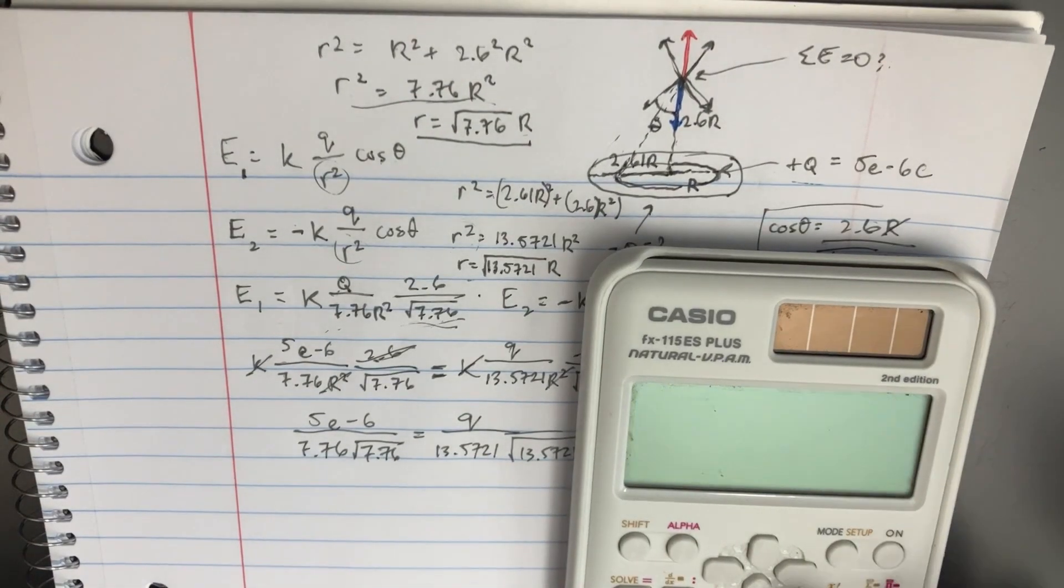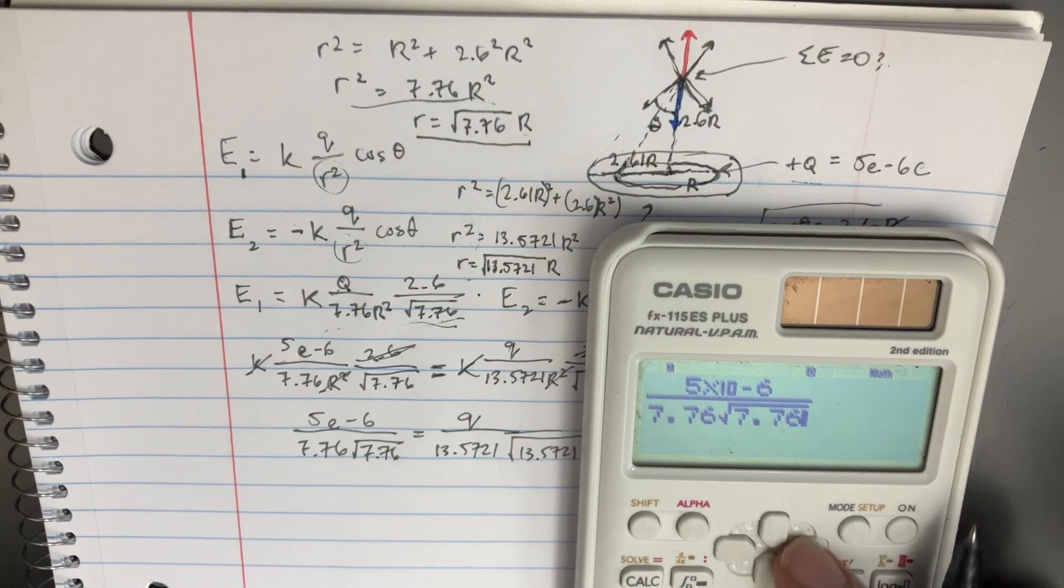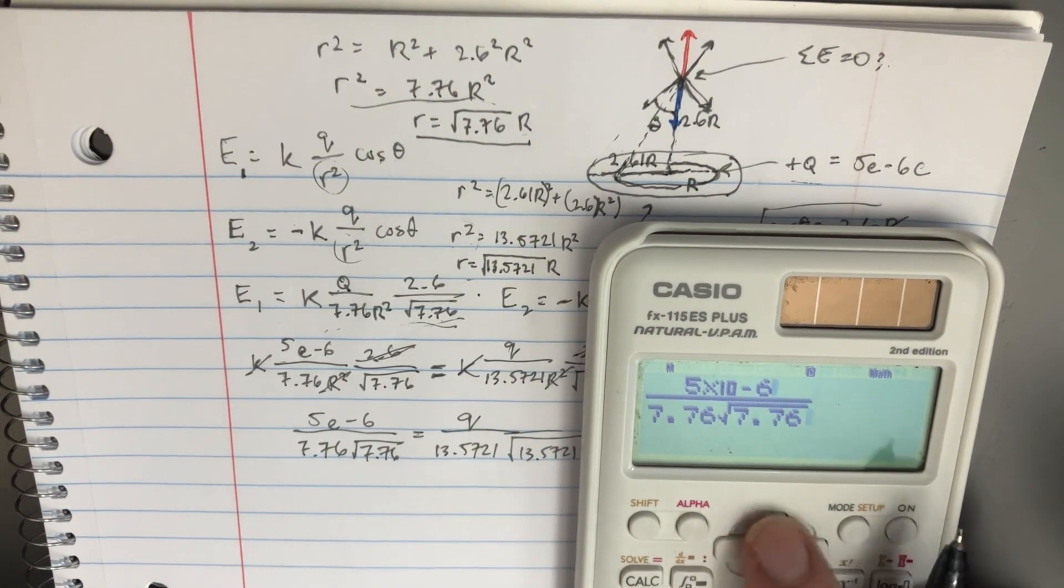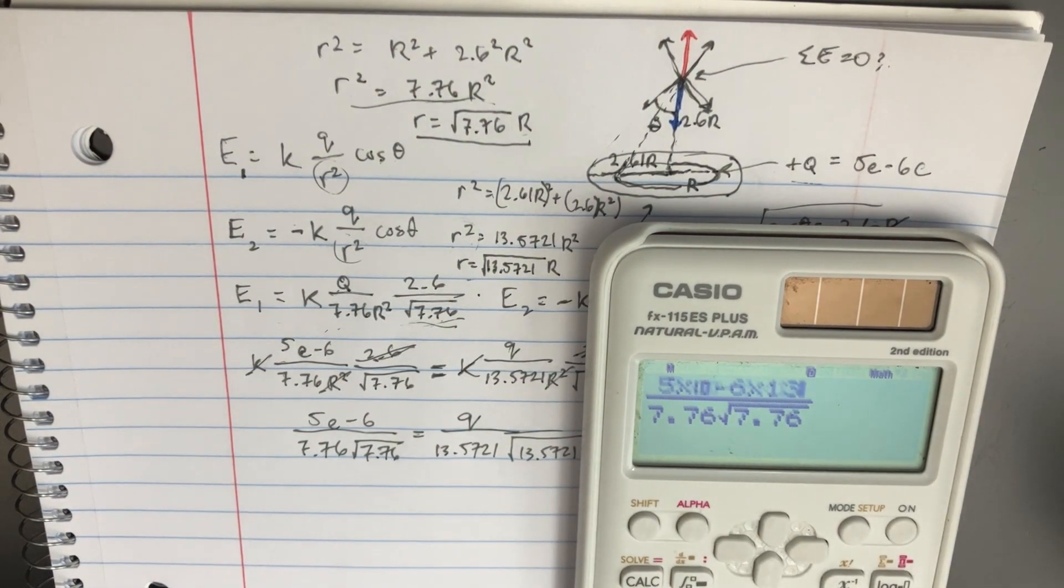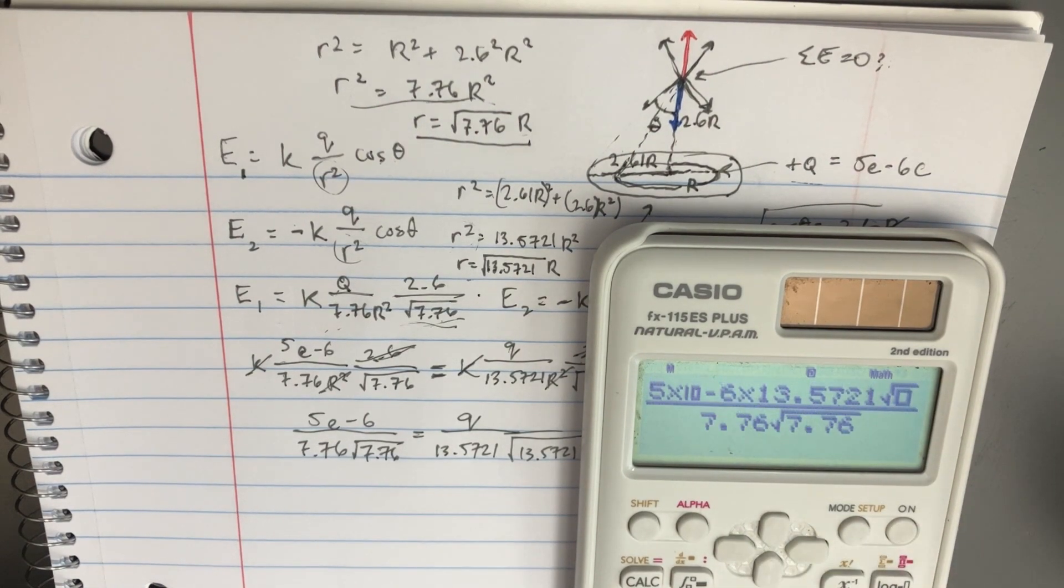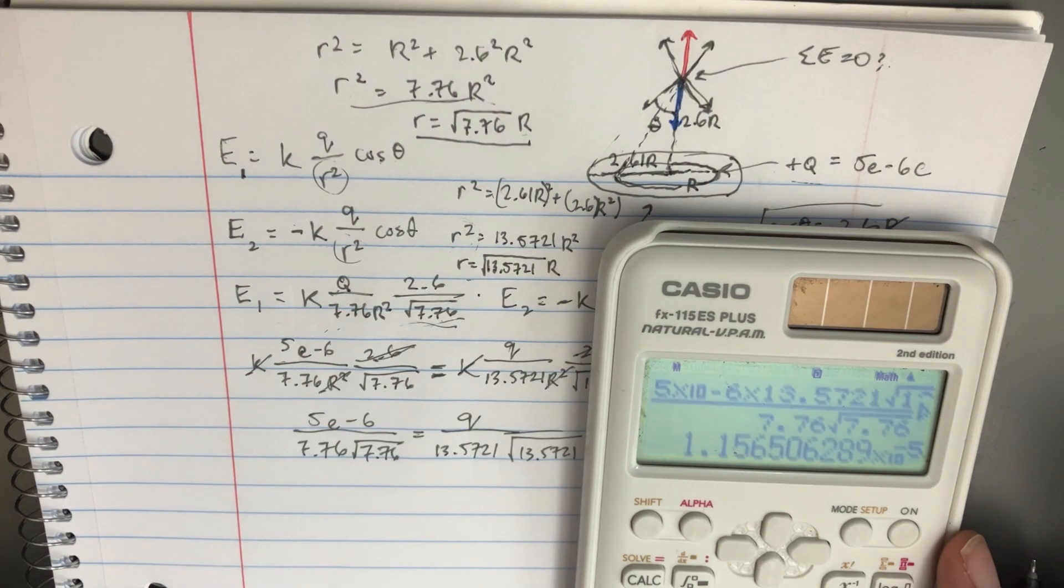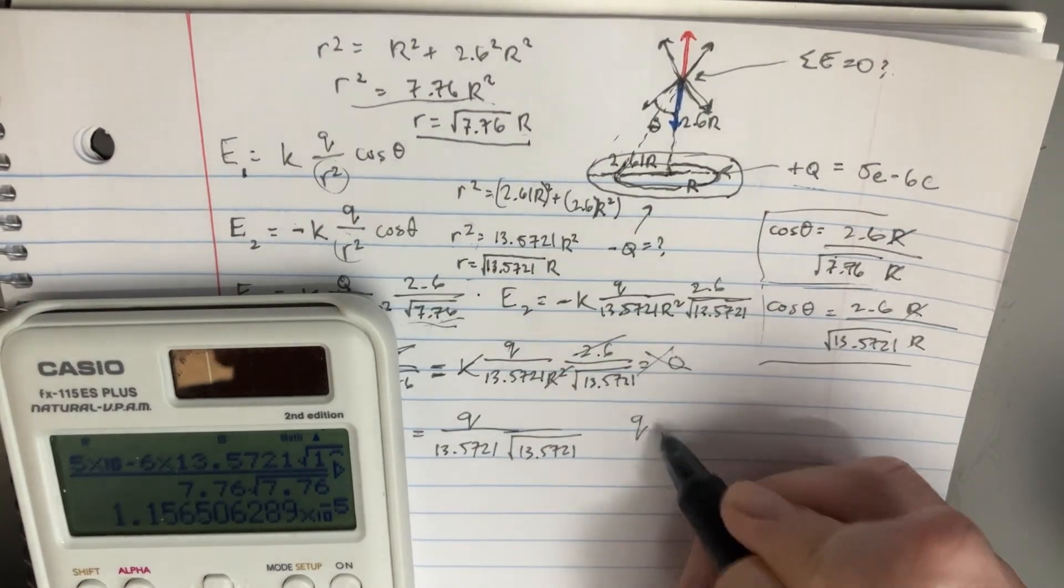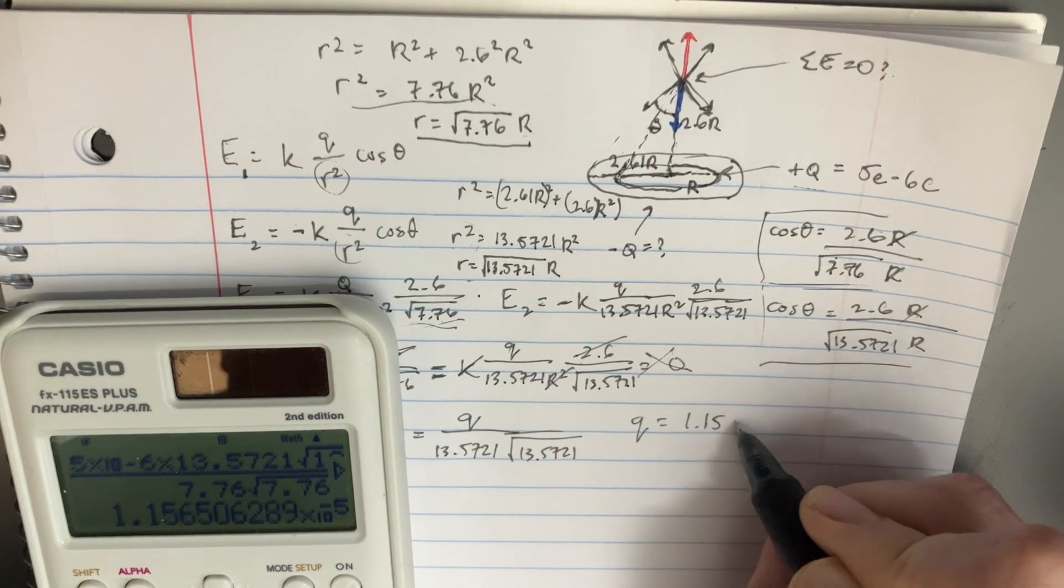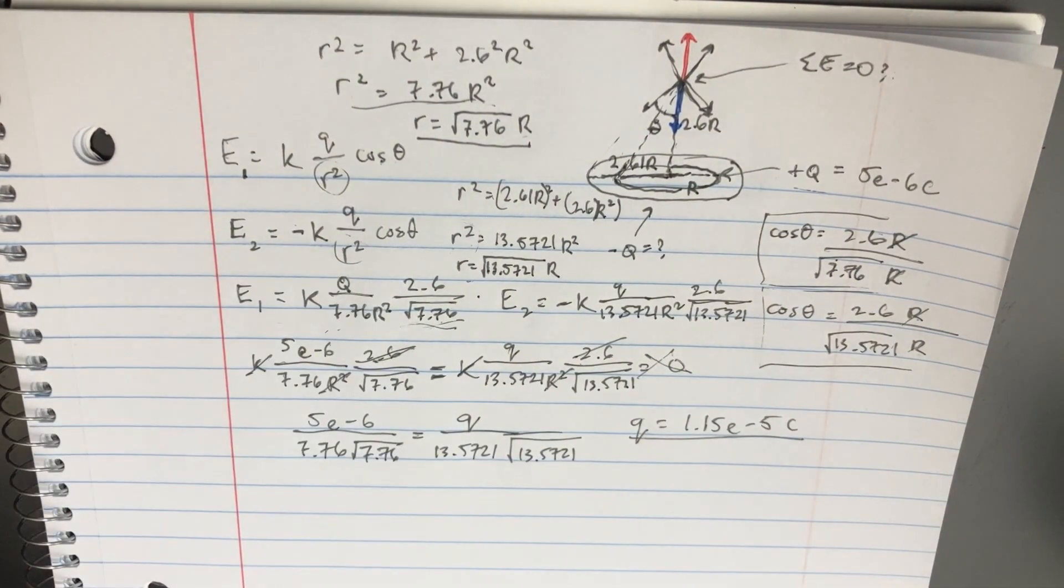So we would say that 5e to the negative 6 over 7.76 square root of 7.76, and then we can multiply the top also by 13.5721 square root of 13.5721, and we'll get, so q equals 1.15 e to the negative 5 coulombs. And so there we go. Not too bad.